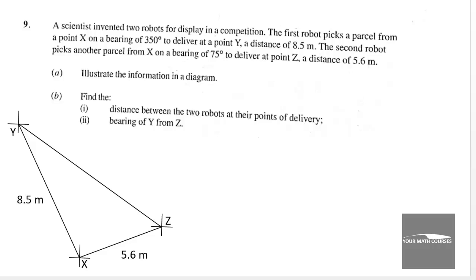So remember that this bearing here was 350. So the angle that is left over here will be 10, 10 degrees. Then also the bearing here is 75. So the angle Y, Z is 85 degrees, 10 plus 75 is 85 degrees.